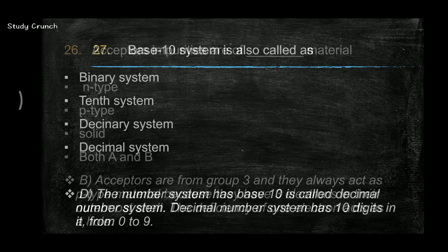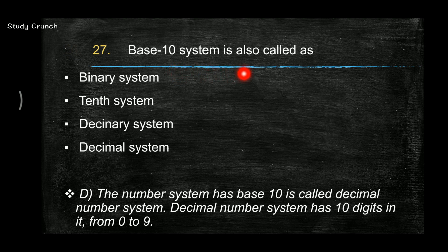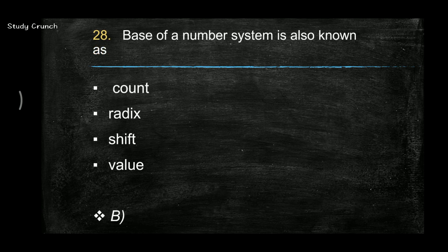Next, base 10 system is also called the decimal system. Base of a number system is also known as radix. So radix is the basic term which we use for defining the base of a number system.